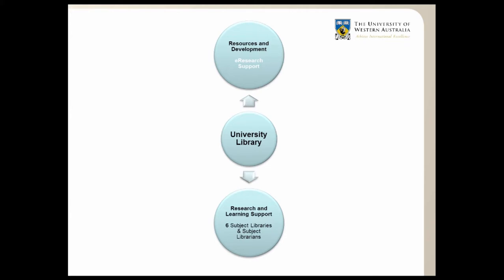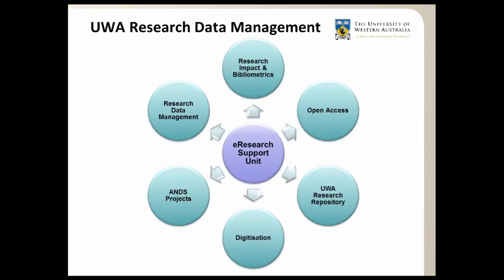The University Library at UWA consists of six subject libraries and subject librarians, and they provide a range of research and learning support services. I work in the e-research support unit, which is separate from the subject libraries, but we work together to deliver digital services to our researchers.